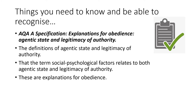So the things you need to know and be able to recognise — I've included the specification point here, which states that explanations for obedience, agentic state and legitimacy of authority, and the definitions of agentic state and legitimacy of authority — you need to know these, they have come up previously. You also need to know that the term social psychological factors relates to both agentic state and legitimacy of authority, and if that came up in a question it would be looking for both of those.